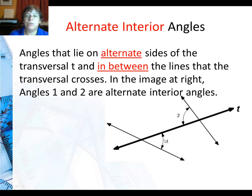Alternate interior angles, so this is a different type of angle pair. They lie on alternate sides of the transversal and in between. So here's my transversal right here. They're not on the same side. That's what the alternate means. And the interior means they're between these two lines that the transversal is crossing, so they have to be in the shaded region. So here, angle one and angle two are alternate interior angles.